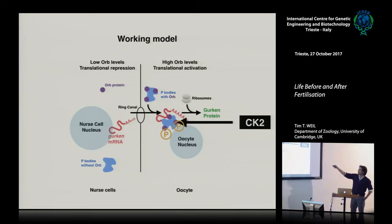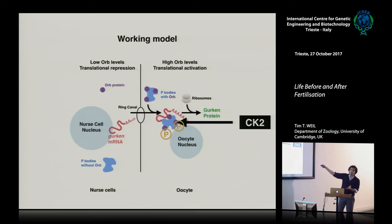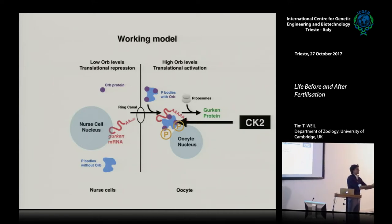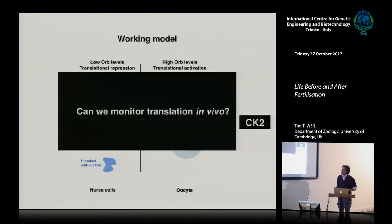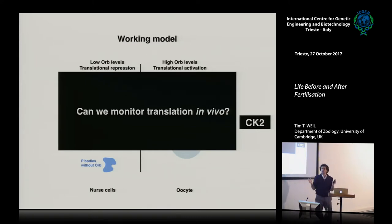In the model: in nurse cells, the RNA is alone and not associating with P-bodies. When it passes into the oocyte, it associates with P-bodies and comes into contact with ORB, which is localized to P-bodies. At the edge of these processing bodies, where translation can occur, the RNA is made into protein. We've also found that what's activating ORB locally at the dorsal anterior corner is a protein called CK2 — an enzyme that phosphorylates ORB.